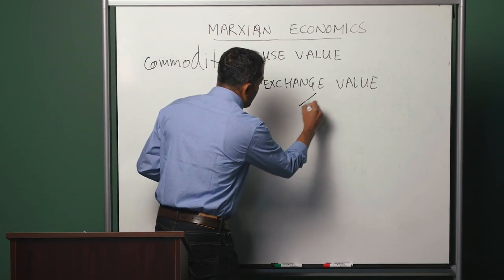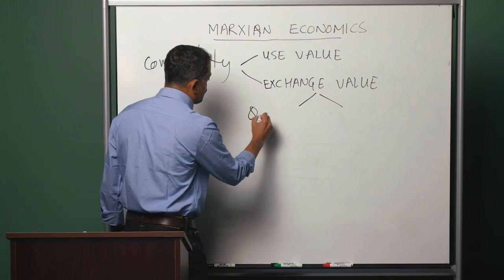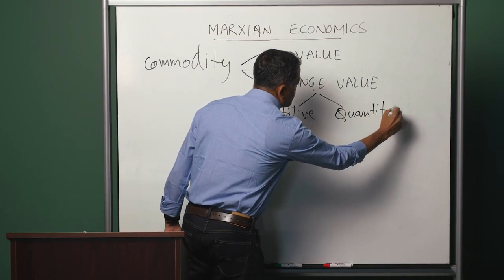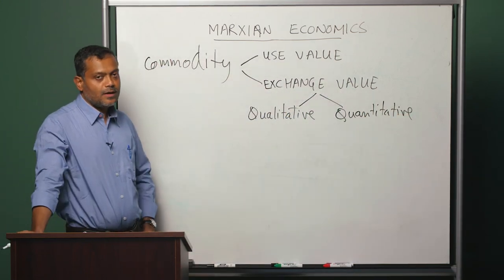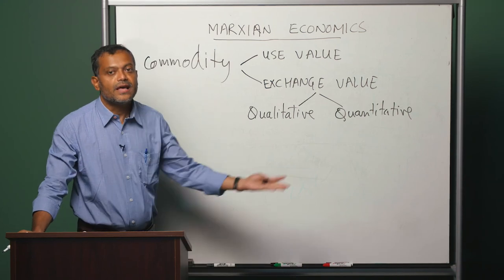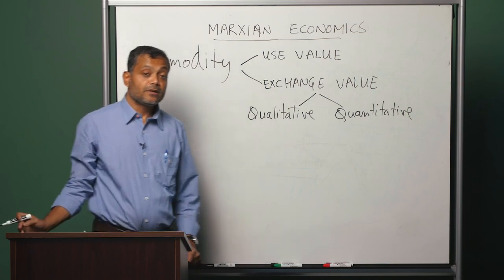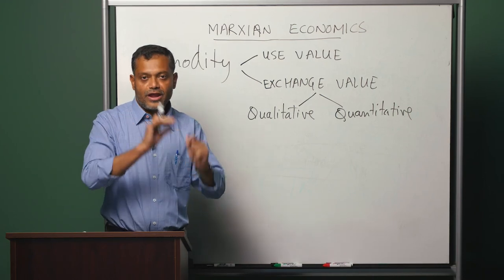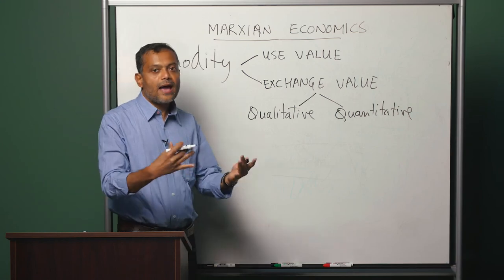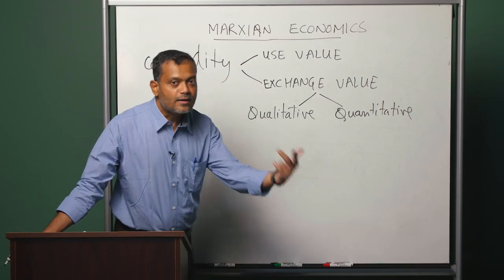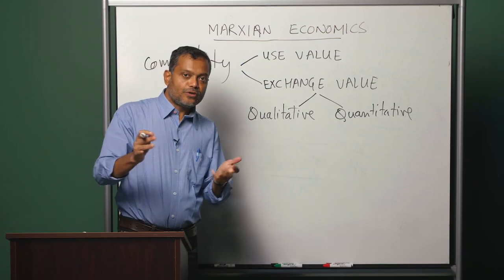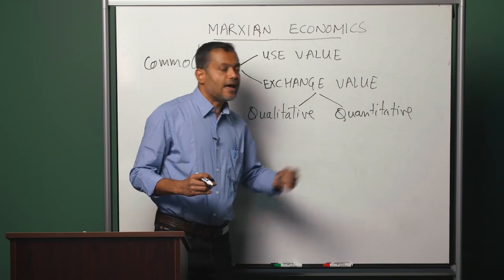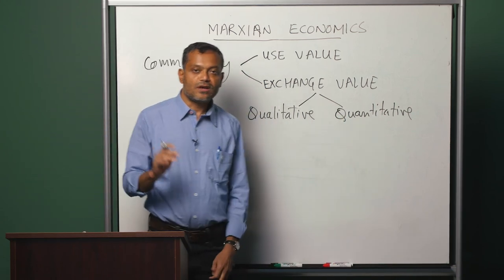Let us think a little bit about exchange value. Exchange value has both a qualitative and a quantitative aspect. The qualitative aspect is that a commodity can be exchanged with every other commodity. The quantitative aspect is that a commodity, when it is exchanged with other commodities, does so in a definite ratio. For instance, one bag of rice will exchange with two tables; one table will exchange with ten pencils. So whenever we think of commodity exchange, there are these two aspects: any commodity can be exchanged with every other, and when a commodity exchanges it always does so in a specific ratio.